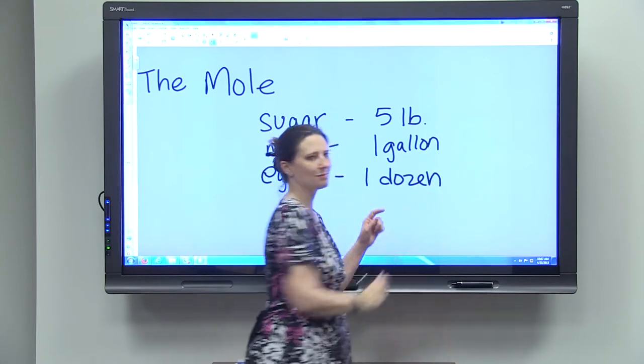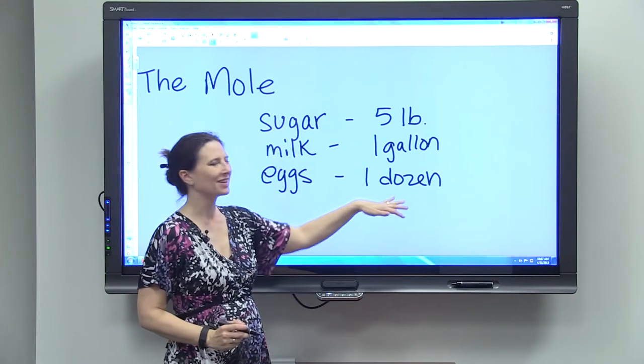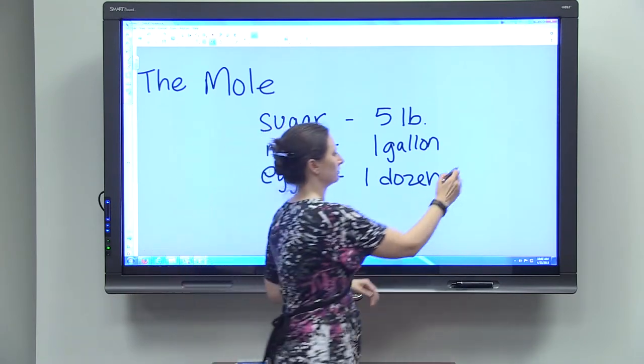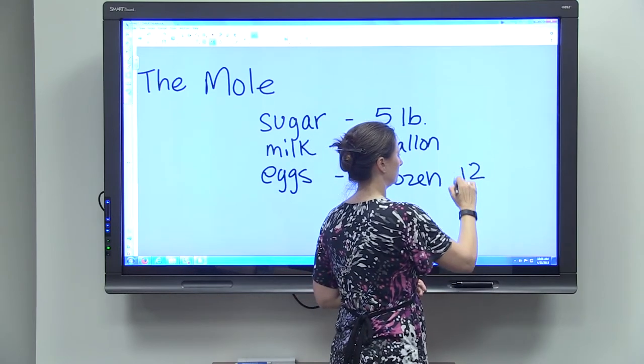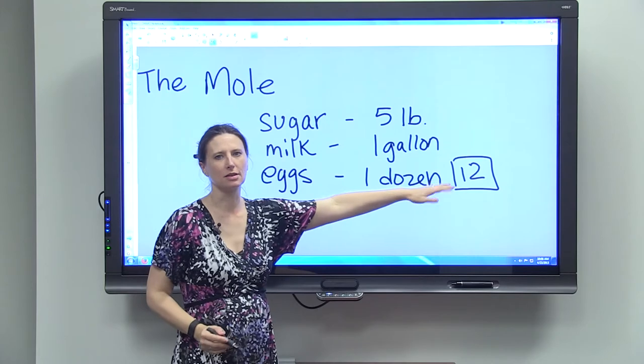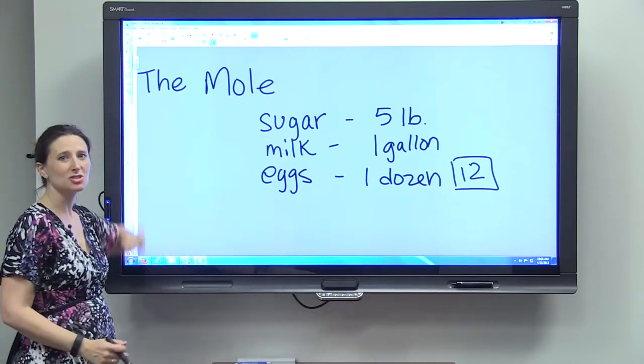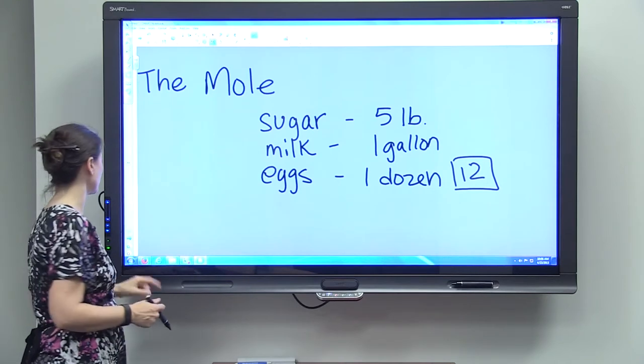And so this is the most useful one for thinking about a mole, because a dozen is a number. It's 12. It's just another way of saying the number 12 is to say one dozen. So a mole is just another way of saying another number.